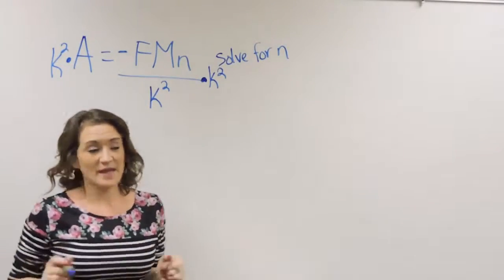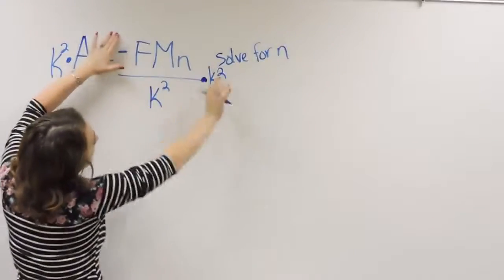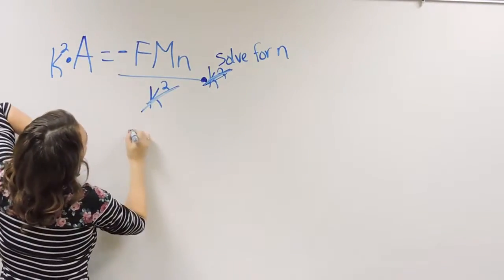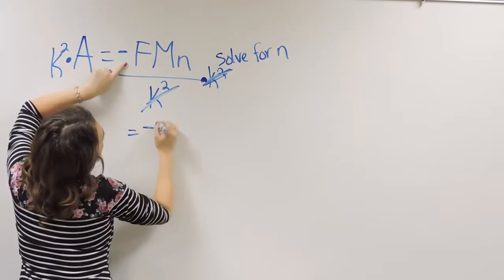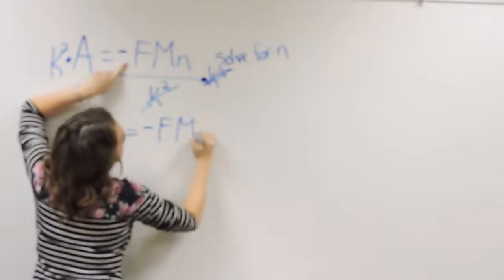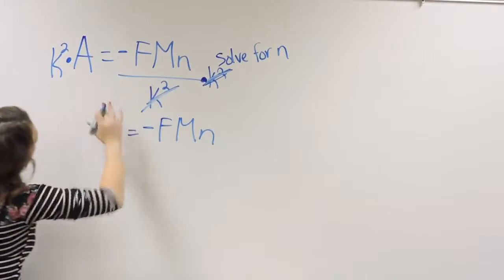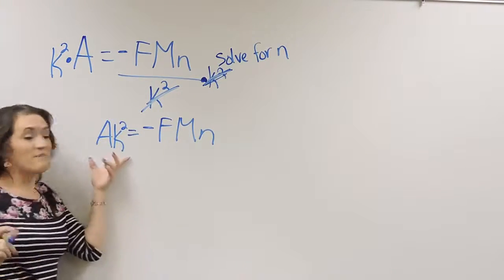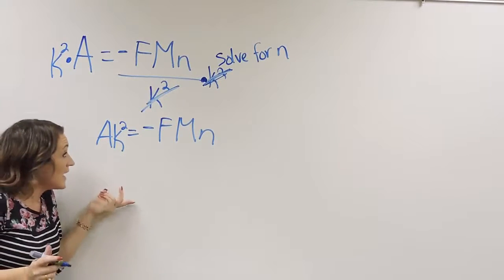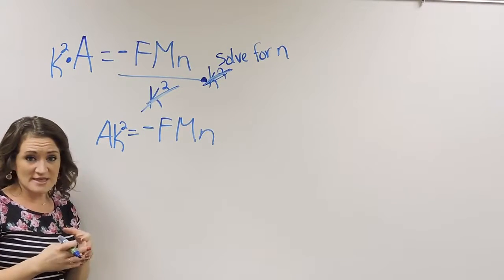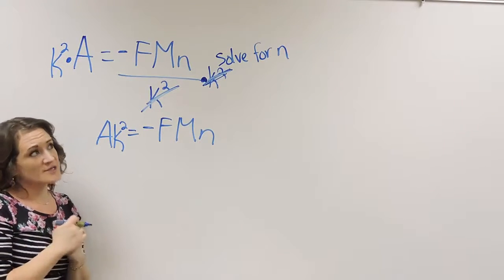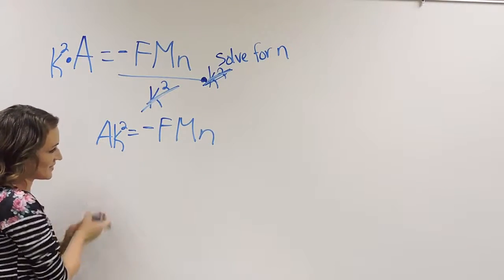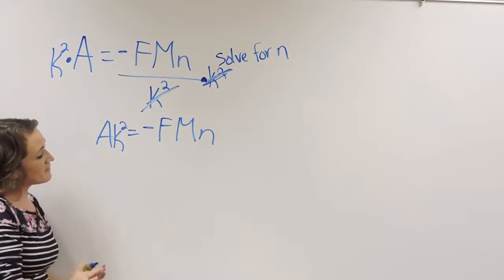I'm going to multiply both sides by k squared because on the right-hand side here, k squared and k squared are going to cancel out, leaving me with negative f, m, n. And on the left-hand side, I had a, and now I'm multiplying it by k squared. A and k squared are not the same variable. They're not like terms or anything like that. I can't actually multiply them together, so I just kind of squish them together there. So that would be my first step there.